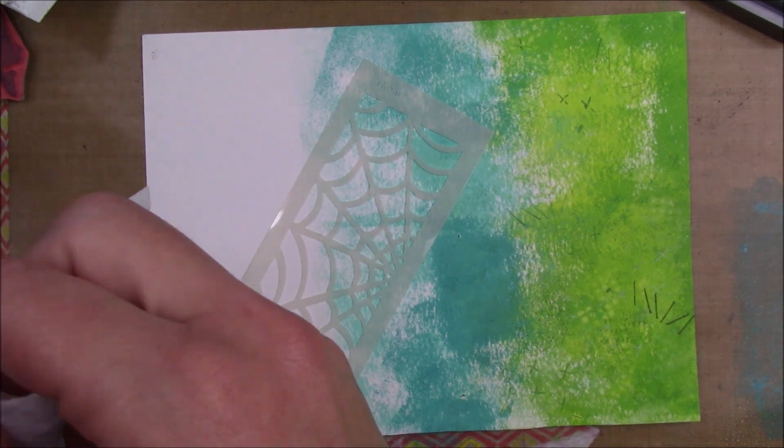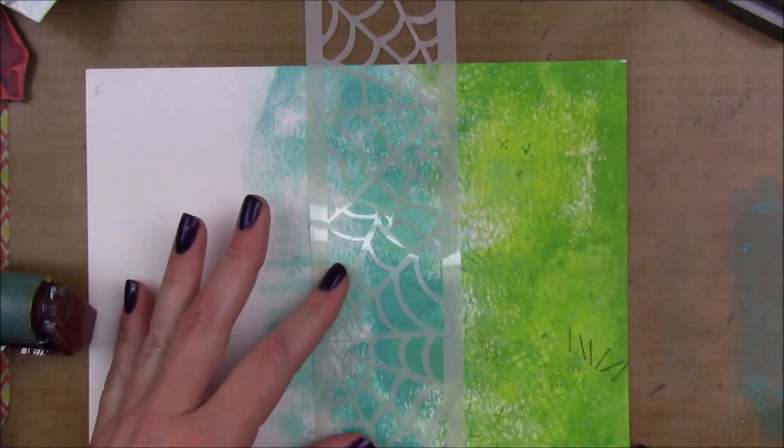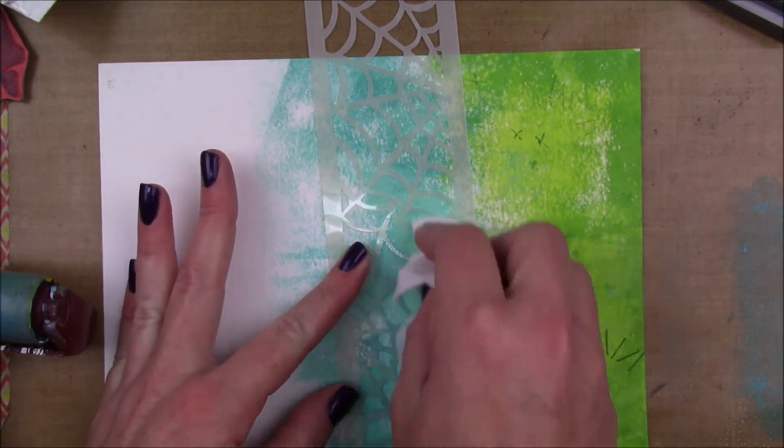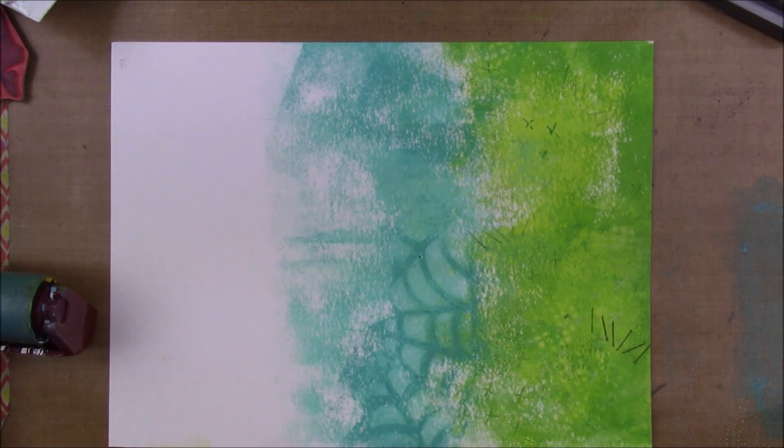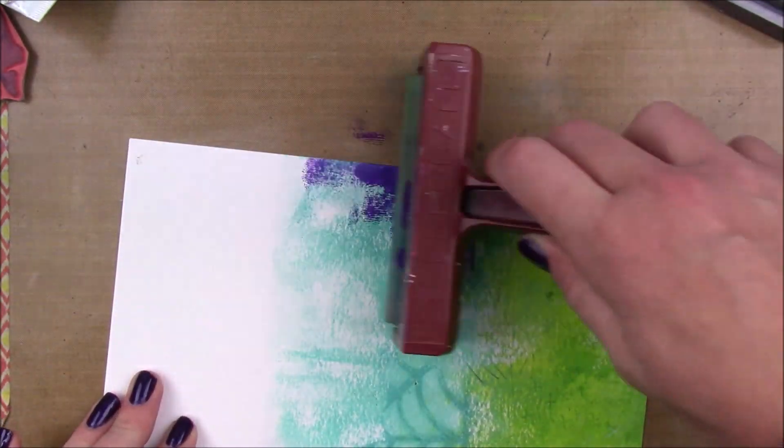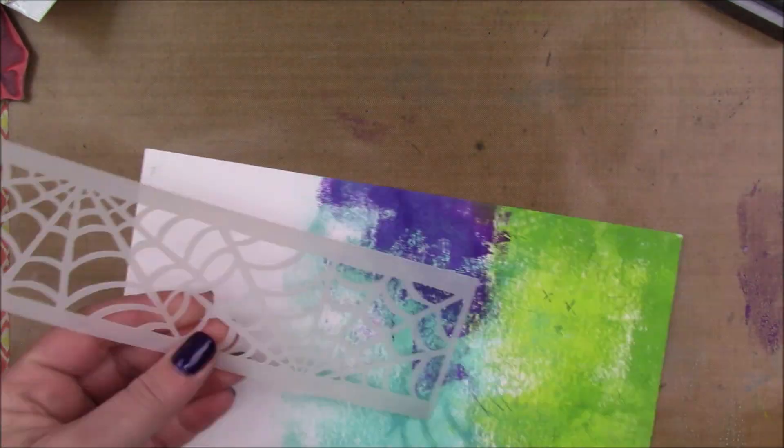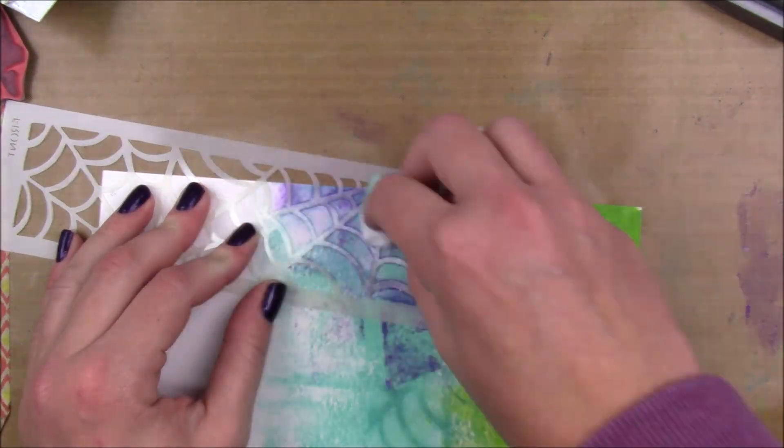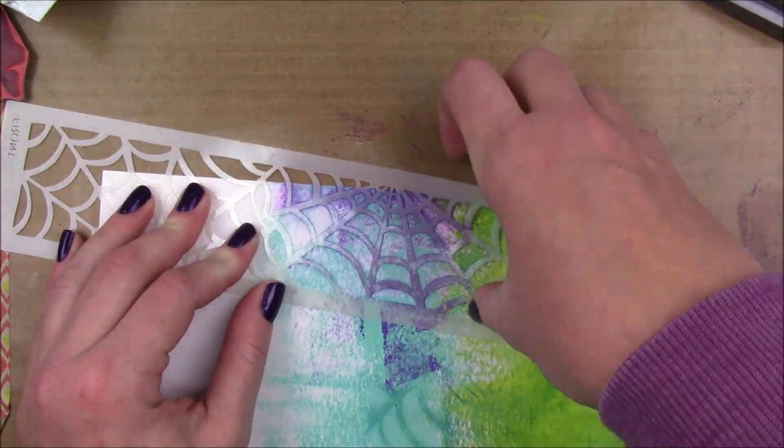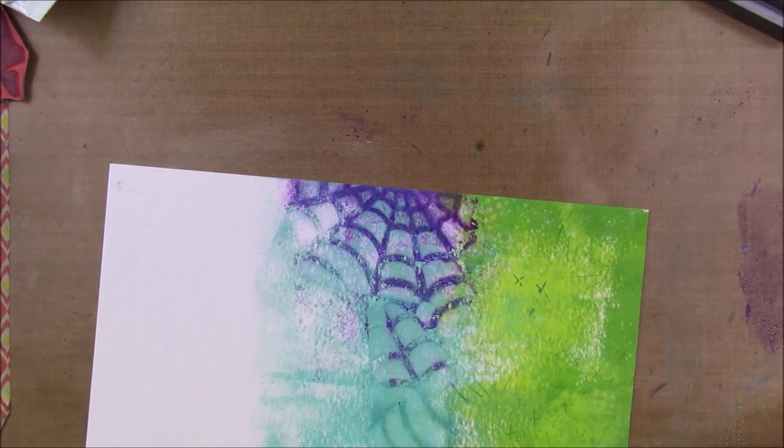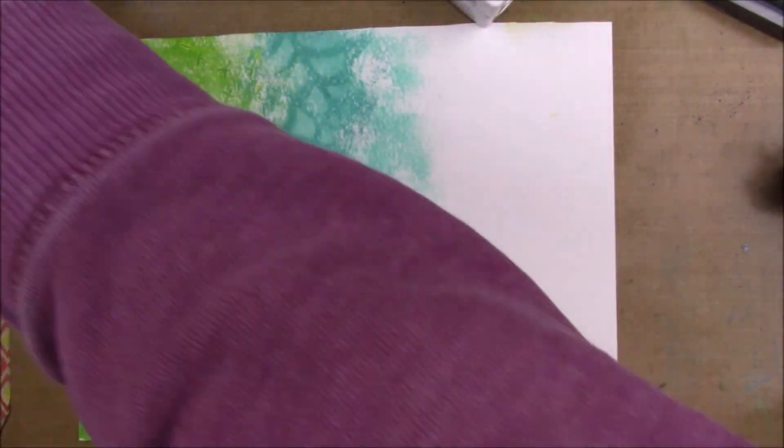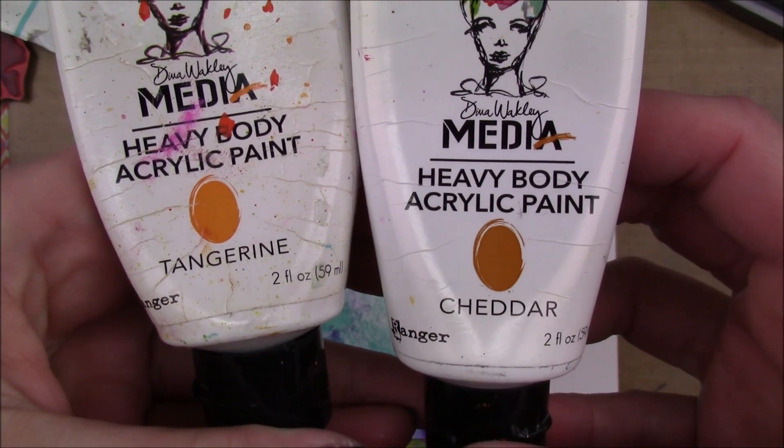Now I'm gonna take this Dylusions spiderweb border stencil and remove some of the darker paint to reveal that spiderwebbing. I'm gonna apply some of that blackberry, and it looks really dark at first, but once I remove that paint with the baby wipe, I really like the way it looks.